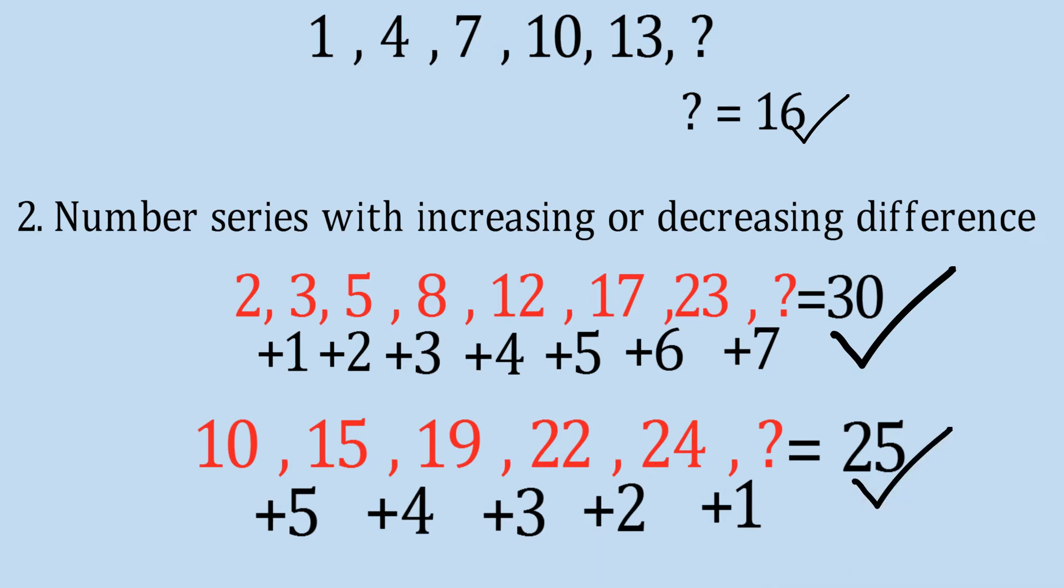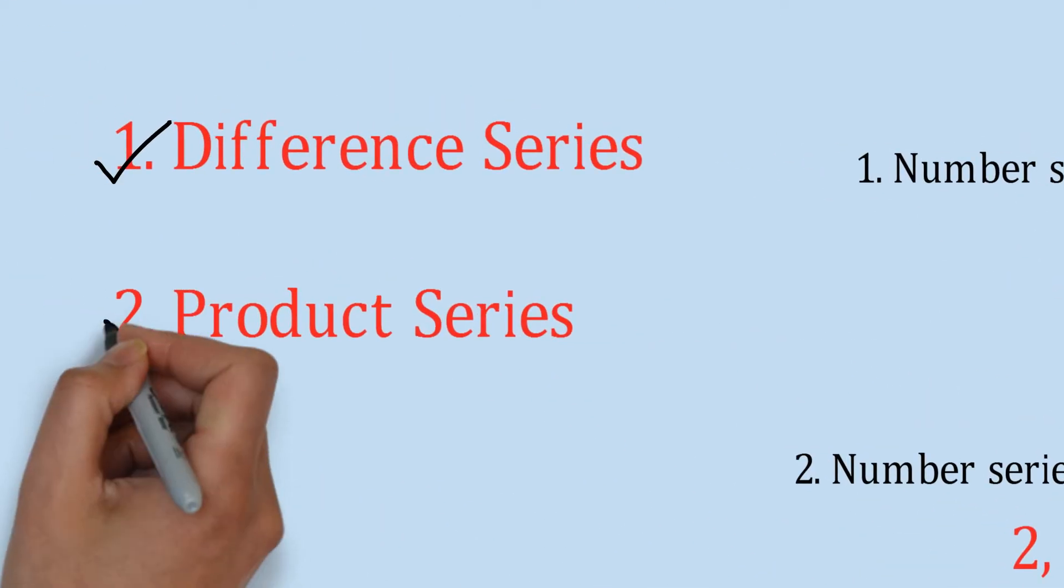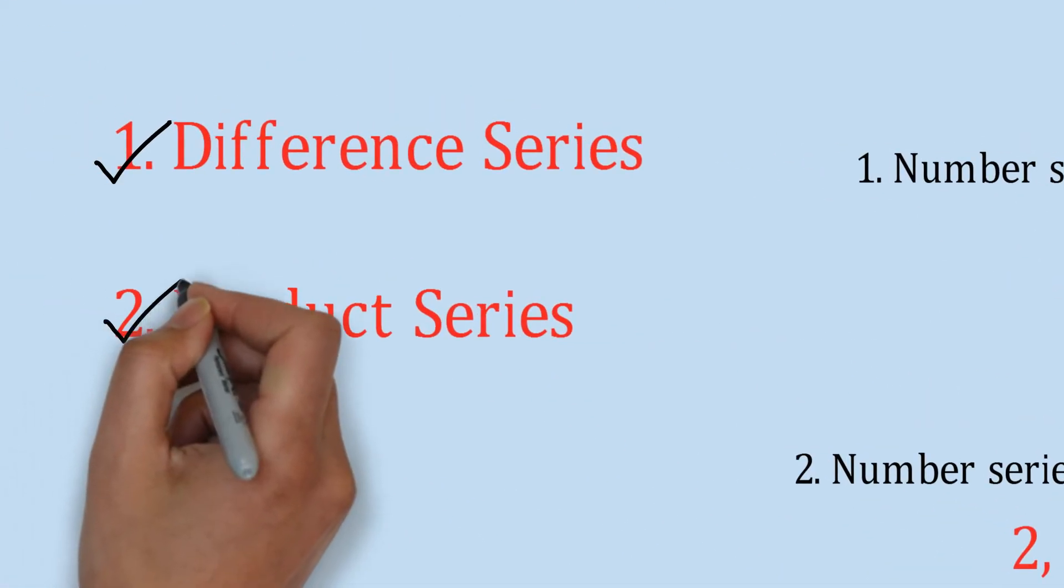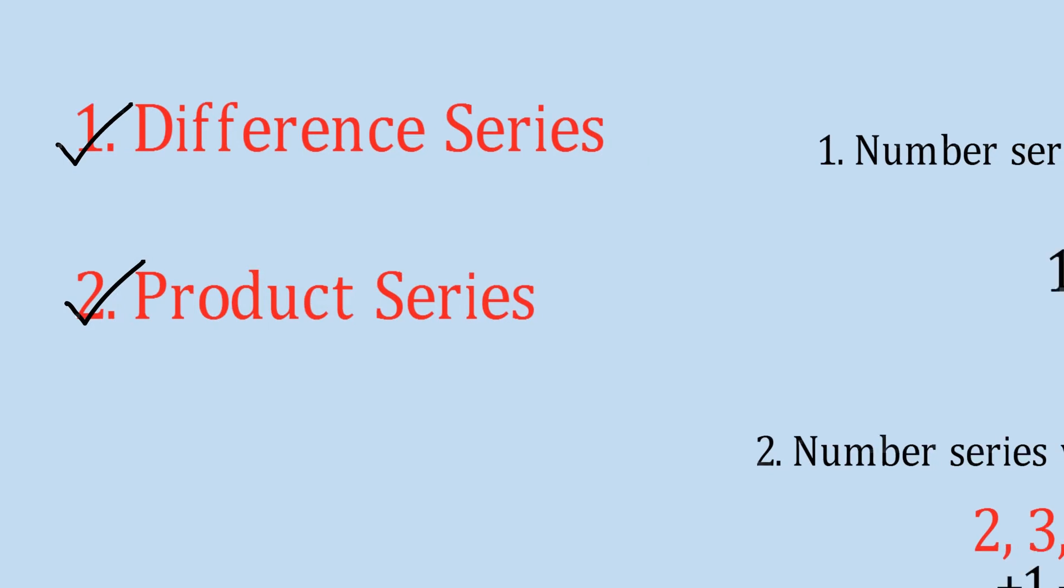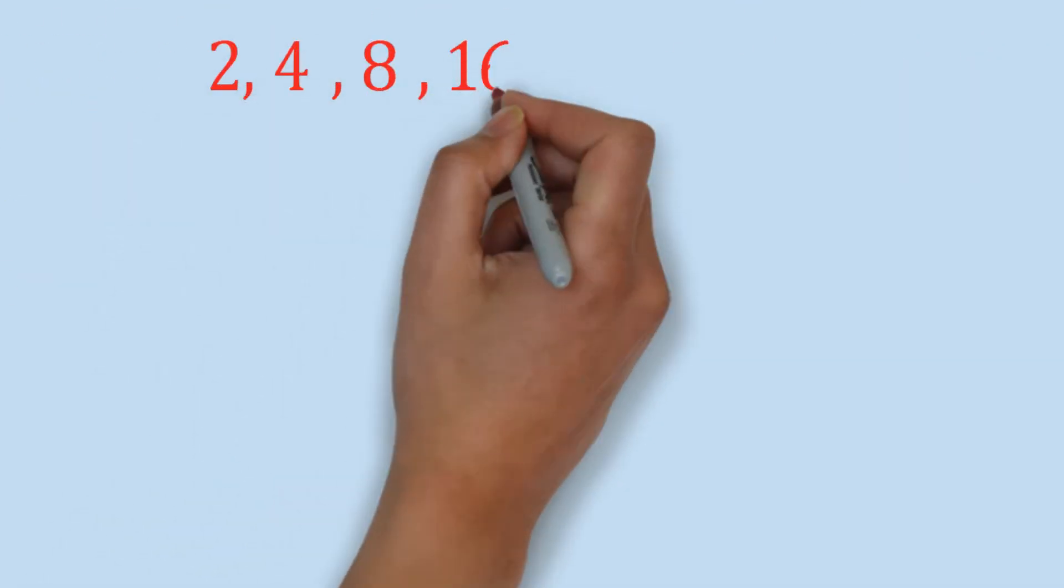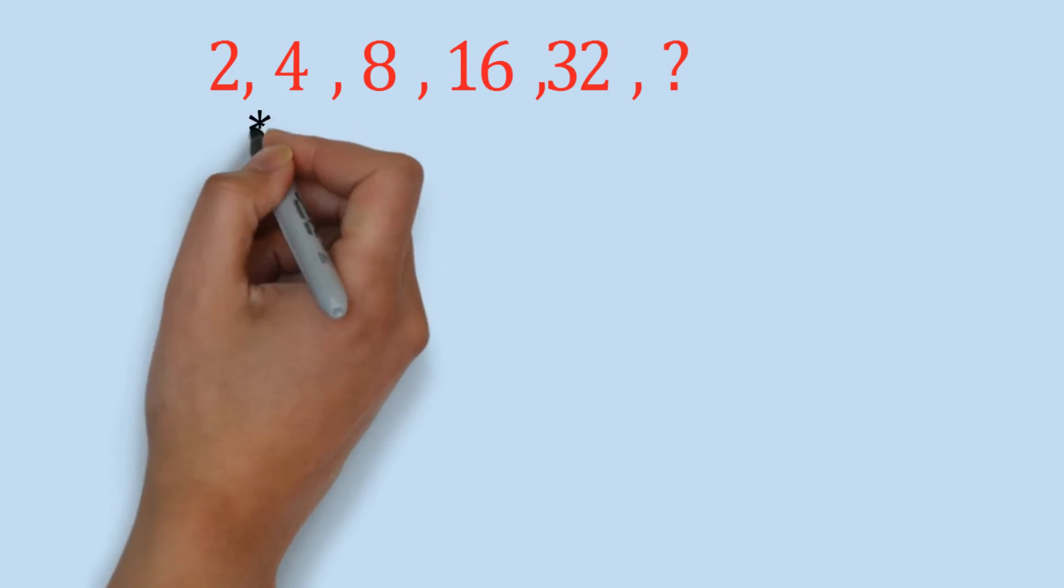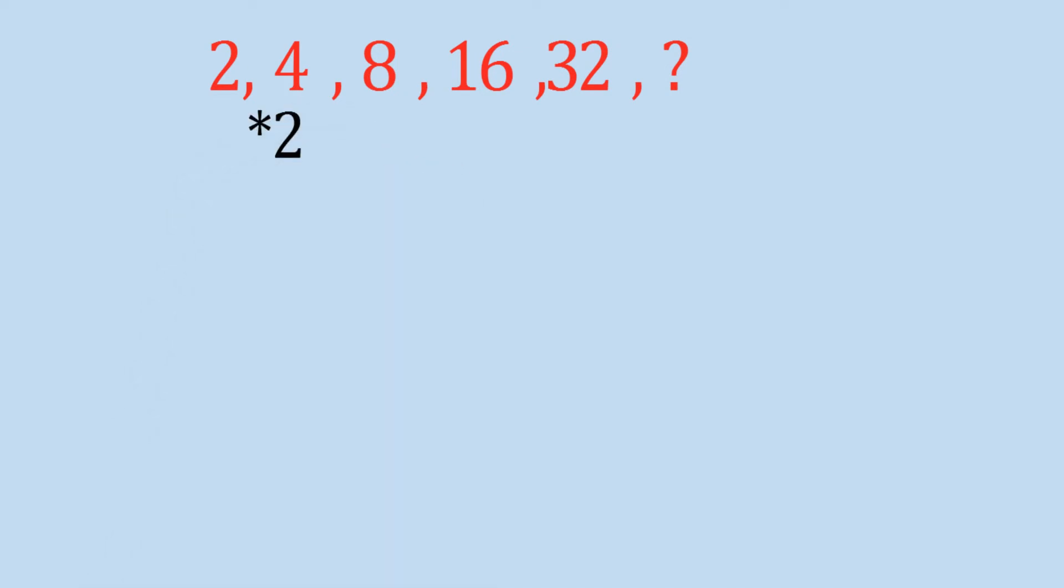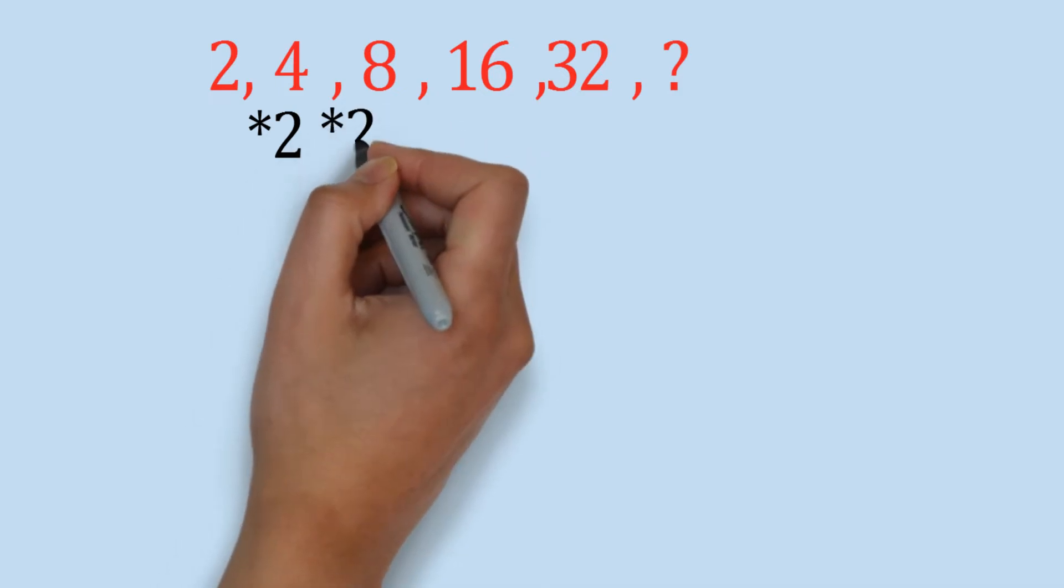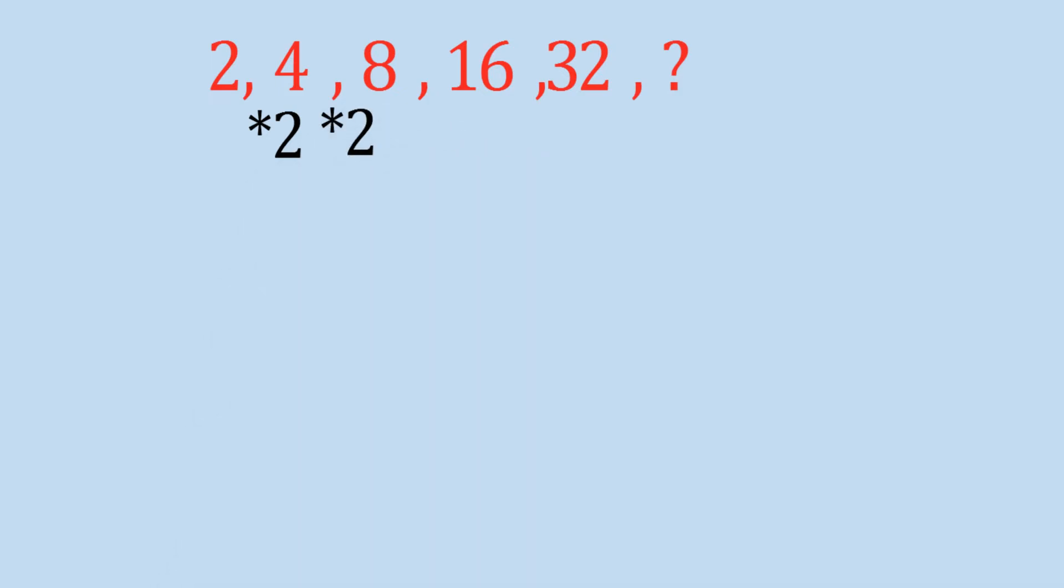The next one is the product series. What happens in the product series is 2, 4, 8, 16, 32. So every time the number is getting multiplied by 2, so the next number would definitely be 64.